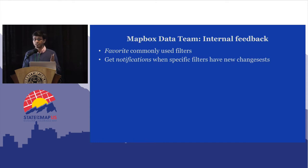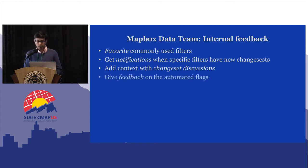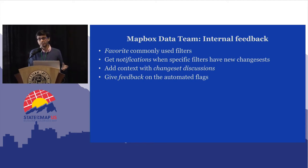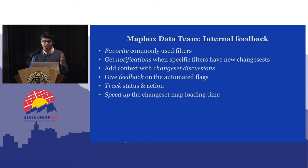Common requests included having a saved set of favorite filters — 'I regularly check the same stuff, why can't I save it?' — and getting notifications for specific changes in a specific area. People also wanted more context on whether discussions were already happening on a changeset, so you wouldn't review something someone in the community had already replied to. There were also requests to give more feedback to automated flags, since OSM-Char uses simple rule-based detectors that might be correctly or incorrectly flagged, requiring a manual feedback loop.